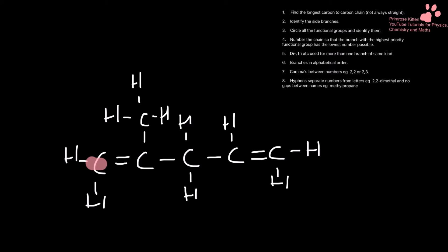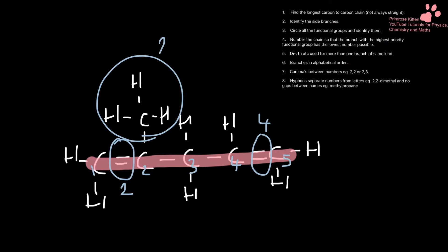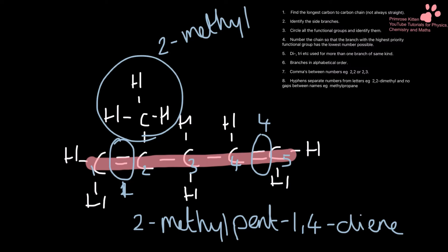Slightly harder one now. Here is my longest chain and I have not only some double bonds here and here, but I also have a methyl group up here. I'm going to number it: one, two, three, four, five. I have a double bond on two and a double bond on four. I have a methyl functional group on two. My mistake — that is on one, not two. So this is 2-methylpenta-1,4-diene.